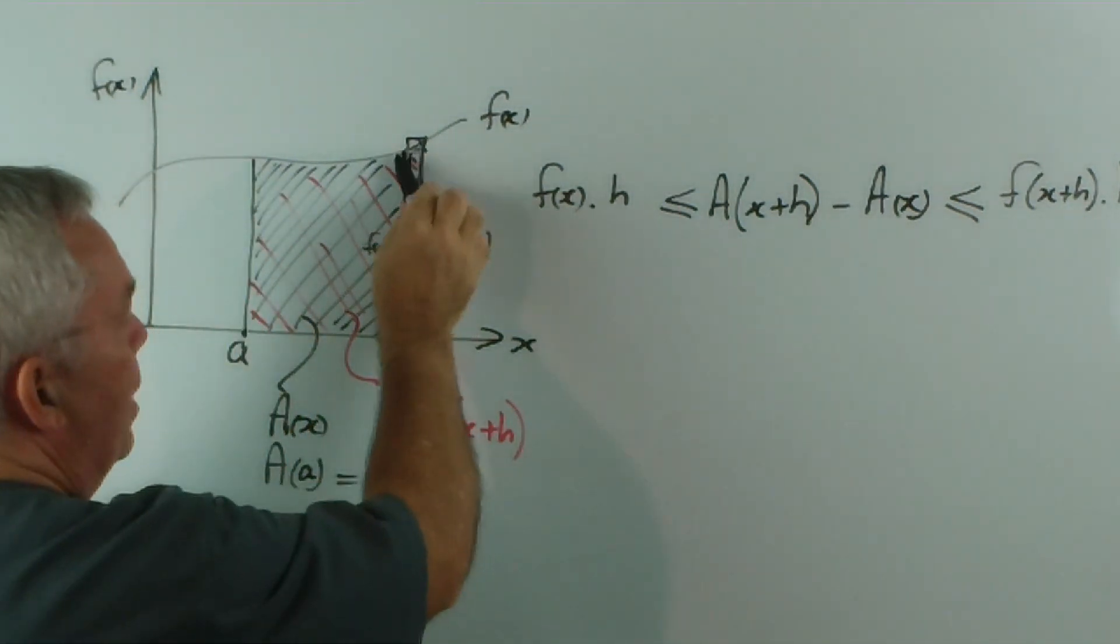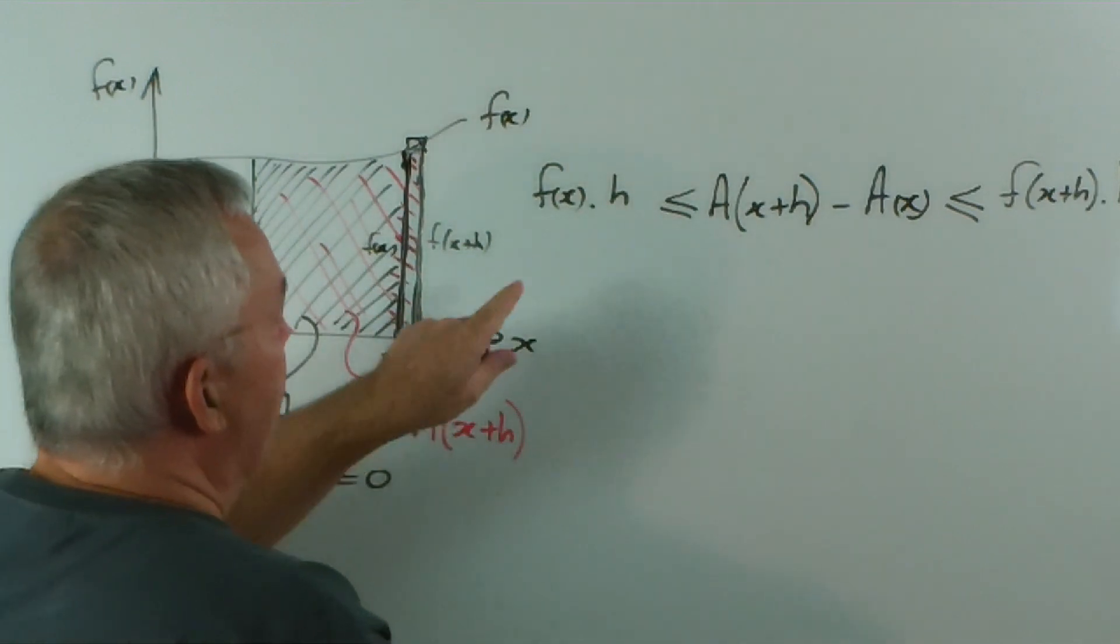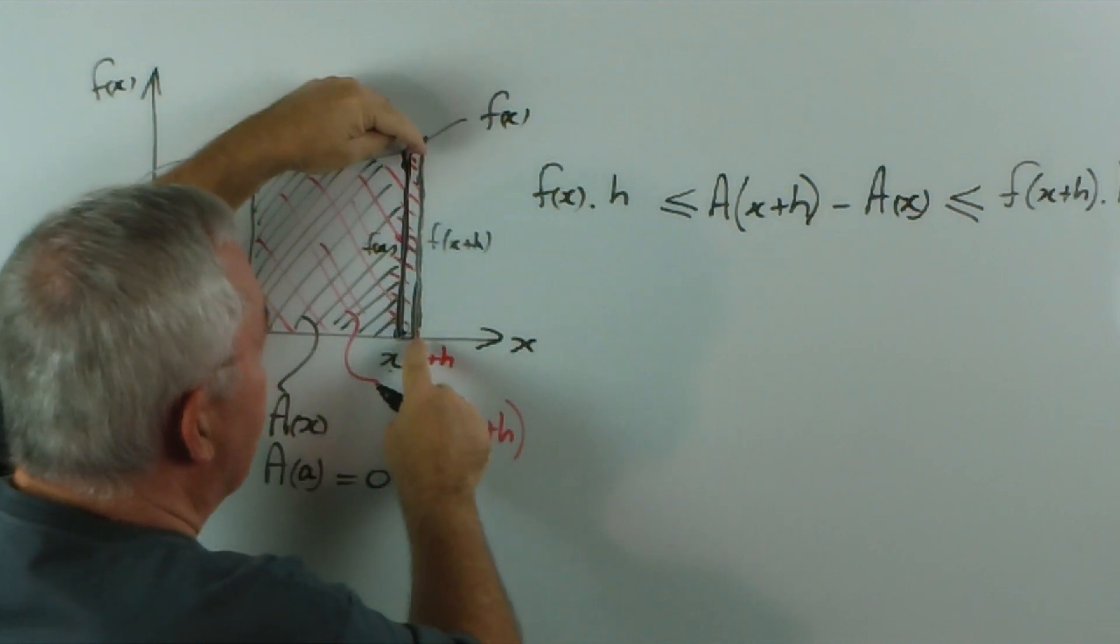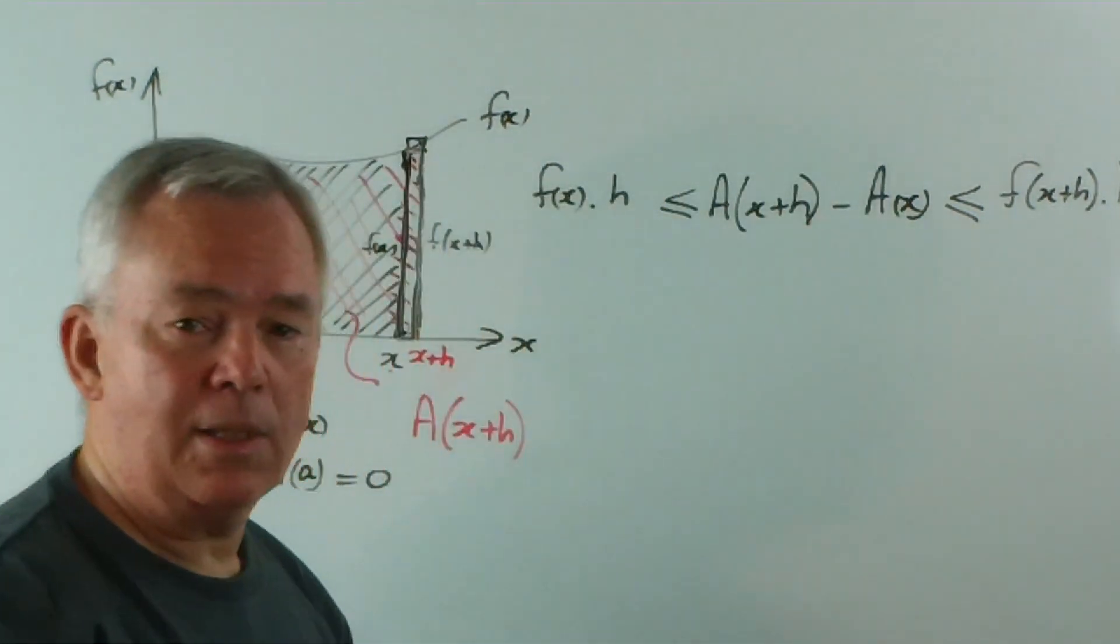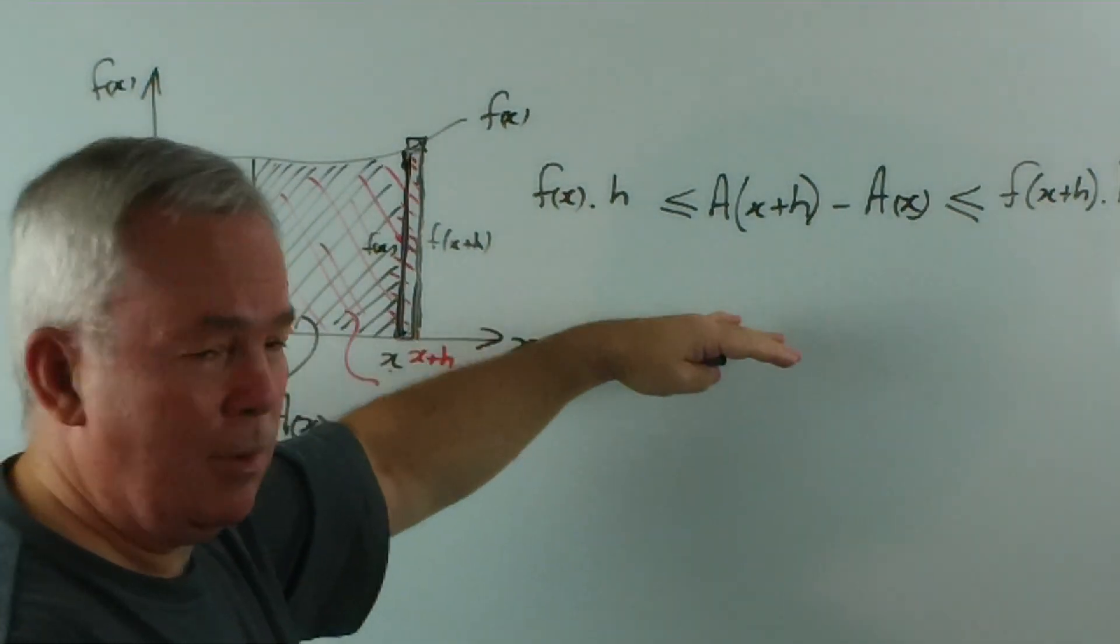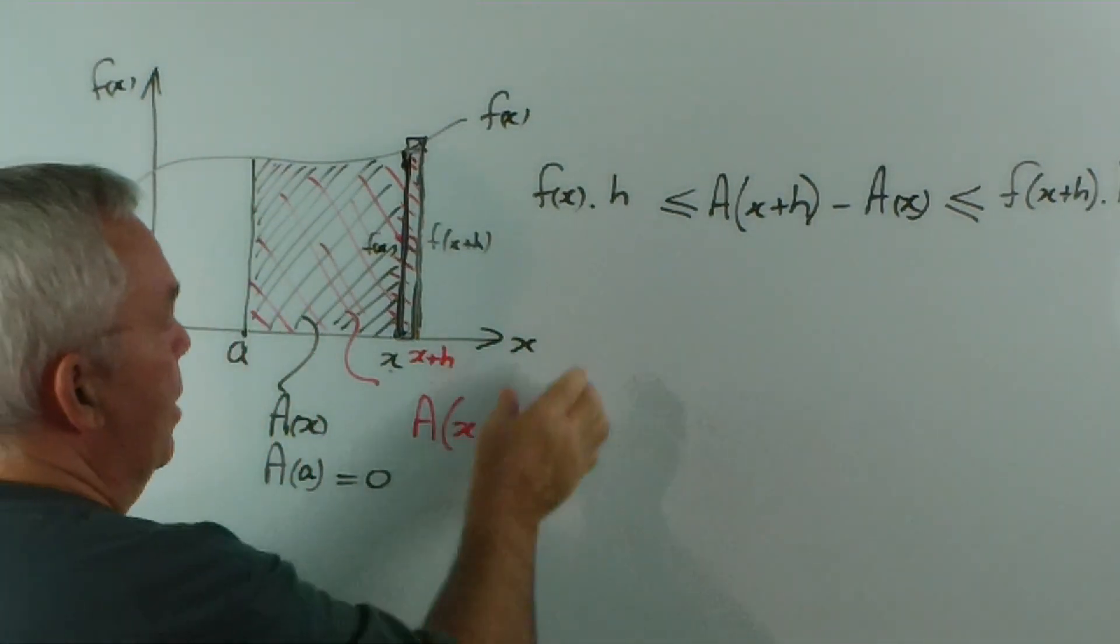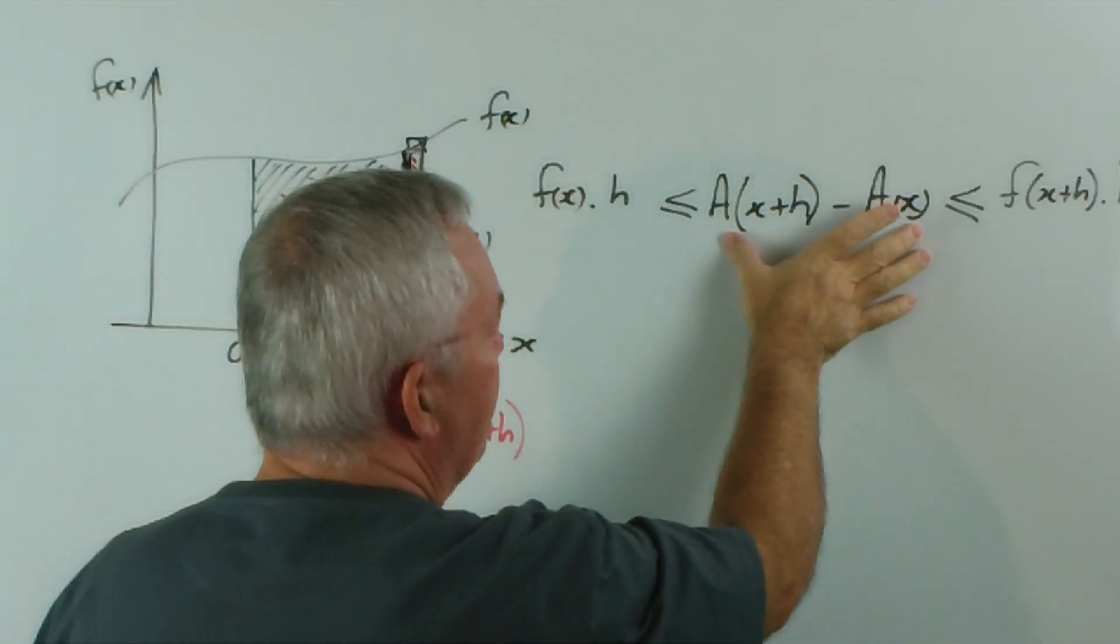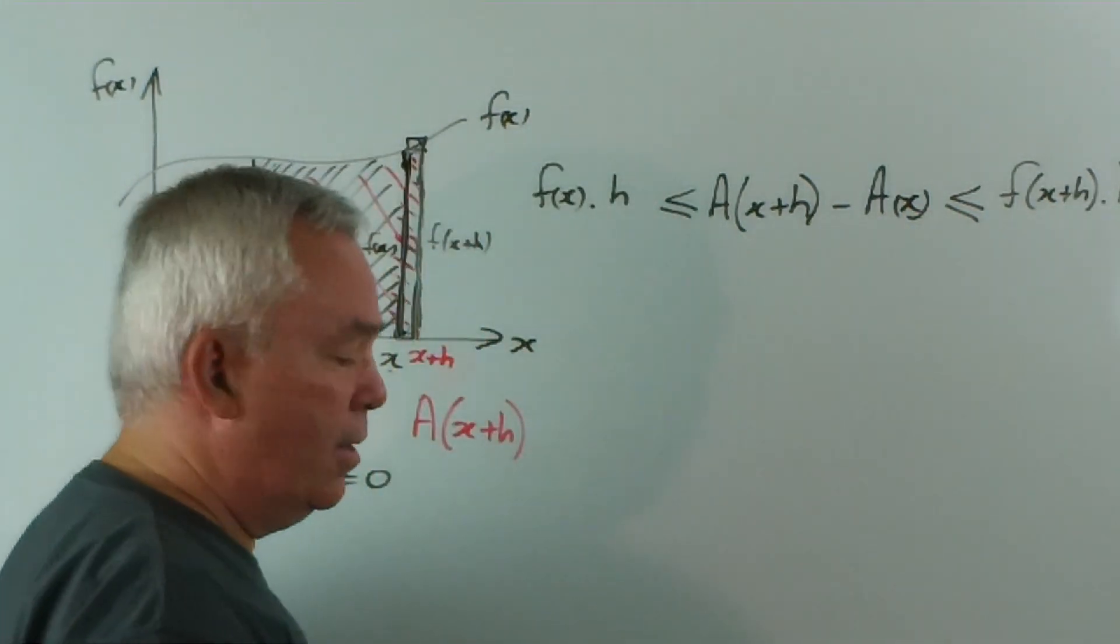Now, you might say, we don't know the curve's rising. What if it was dropping? Well, all that would happen is that f would be higher and f would be lower. So these two would swap positions, but everything else would stay the same. And we'll see, in a couple of lines of work, that it really doesn't matter. But you can see that the lower rectangle is less than or equal to this area under the curve, which is less than or equal to the upper rectangle.